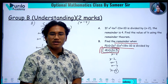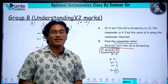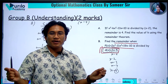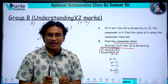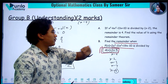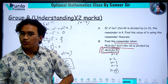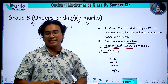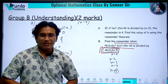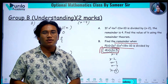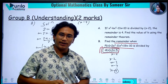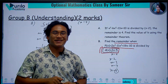If d(x) equals 2x minus 5, we compare it to the form x minus a and substitute the value to get the remainder. We will discuss four more questions in the next lecture.